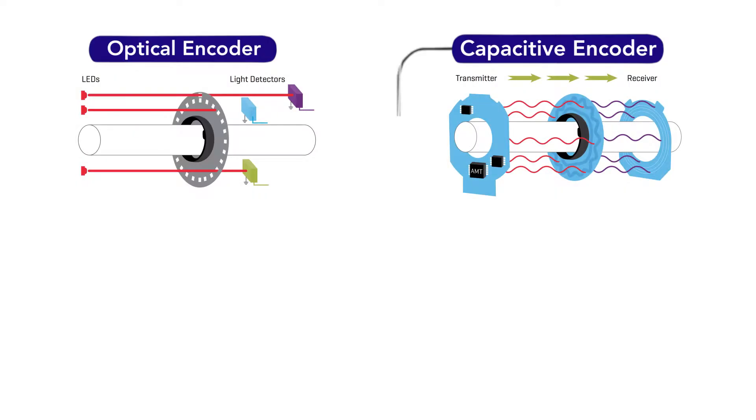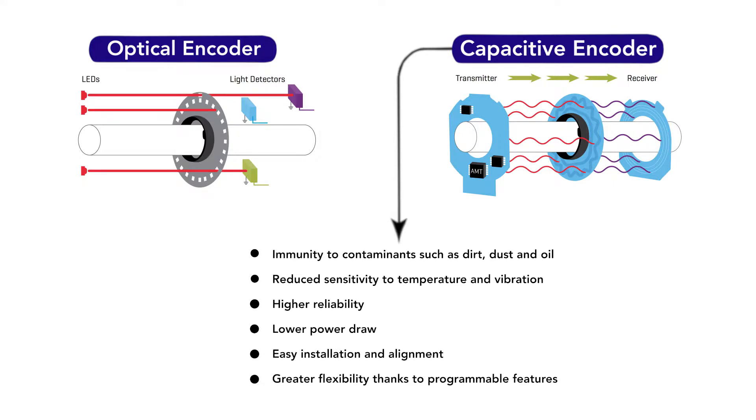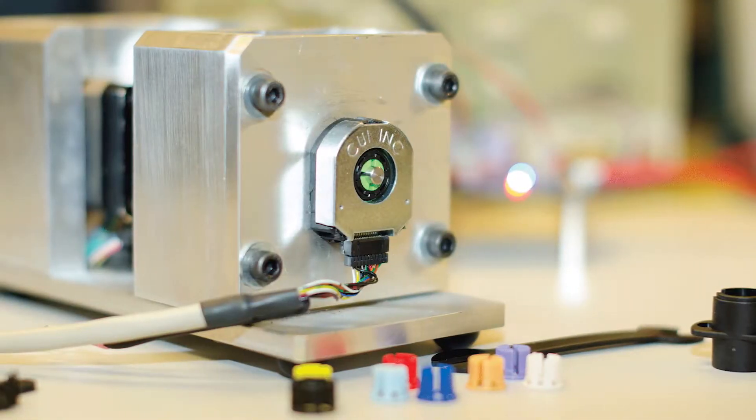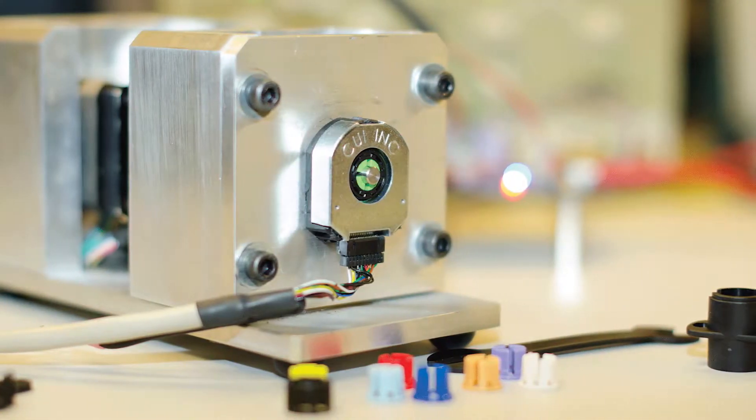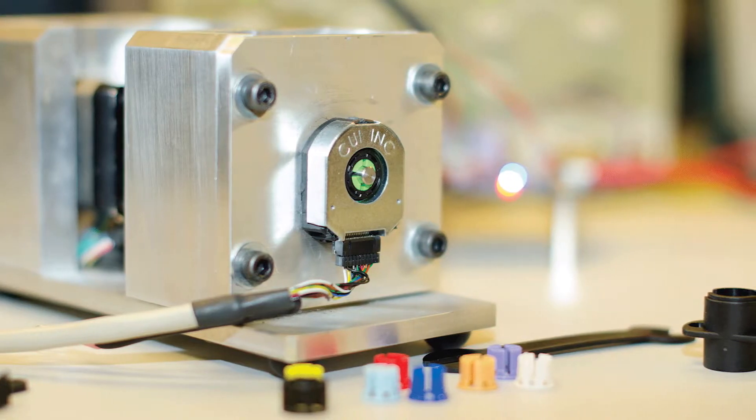Capacitive encoders offer advantages over common optical-based encoders. These include immunity to contaminants such as dirt, dust, and oil, reduced sensitivity to temperature and vibration, higher reliability, and lower power drop. Plus, they're easy to install and align and offer more flexibility thanks to a number of programmable features.